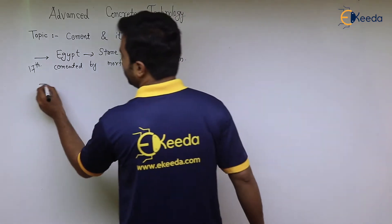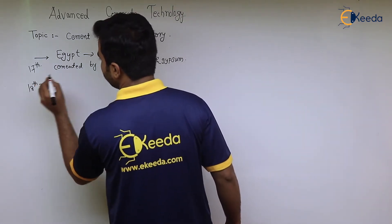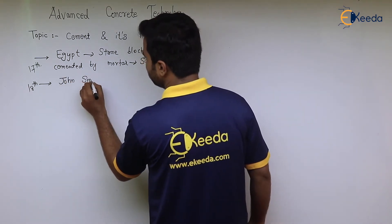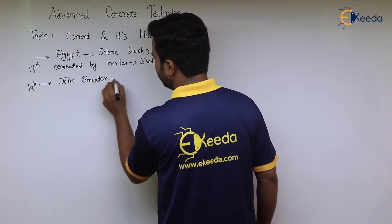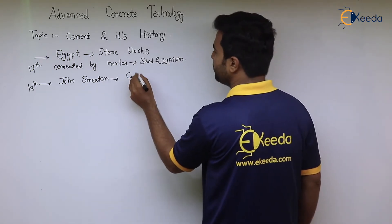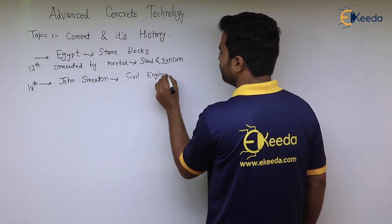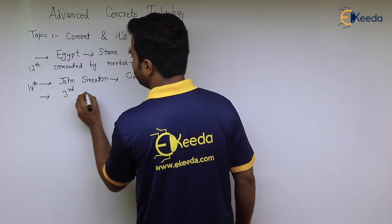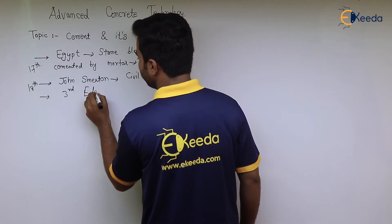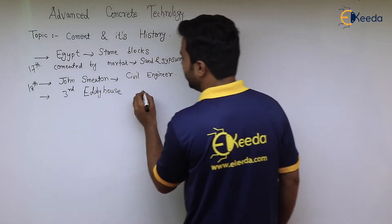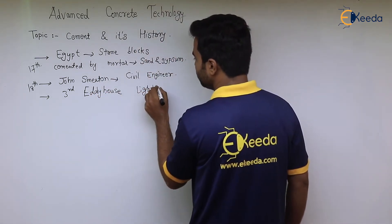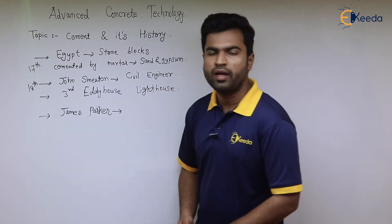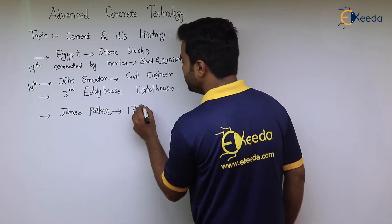In the 18th century, John Smeaton came. He was a civil engineer by profession, and at the time of planning the construction of the third Eddystone lighthouse, he introduced one cement.